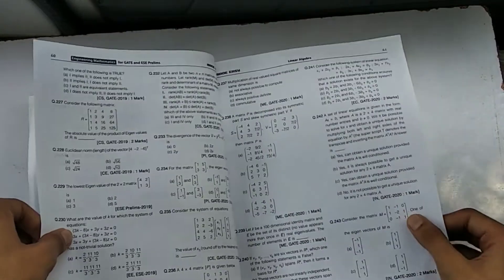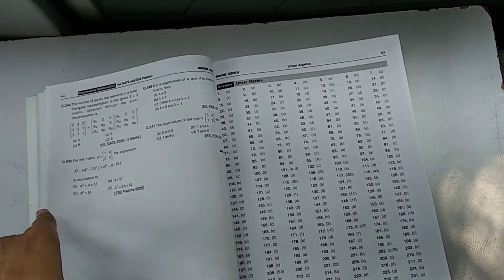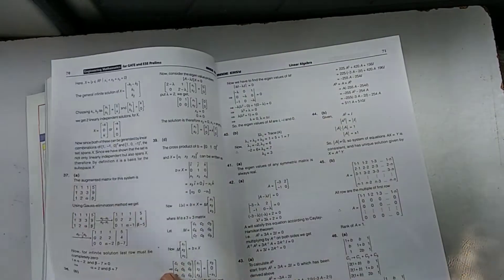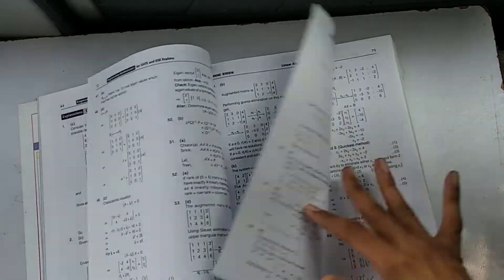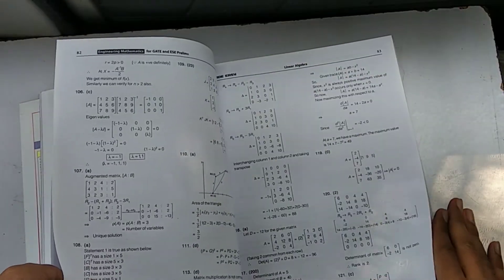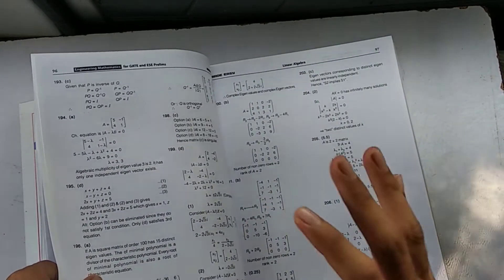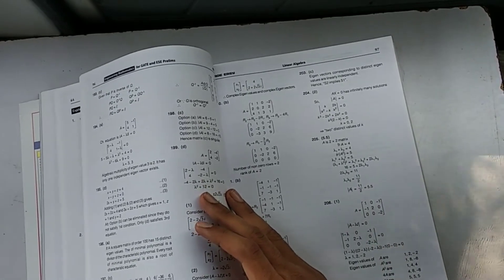Now just see the number of questions that they have given here. They have given all the questions that have come - it has 247 questions in total for Linear Algebra. And here are the solutions - here are the detailed solutions. Everything is solved in detail so you will not have any problem here, and you can easily understand this. This is the case with all the other chapters as well - in the same way they have given the solutions, the theory, the notes, and the examples as well.